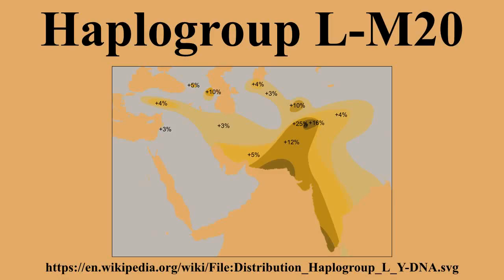The Y Chromosome Consortium tree is the official scientific tree; the last major update was in 2008, with subsequent updates quarterly and biannual. The current version is a revision of the 2010 update. The subclades of haplogroup L M20 with their defining mutations according to the 2012 ISOGG tree are provided below.